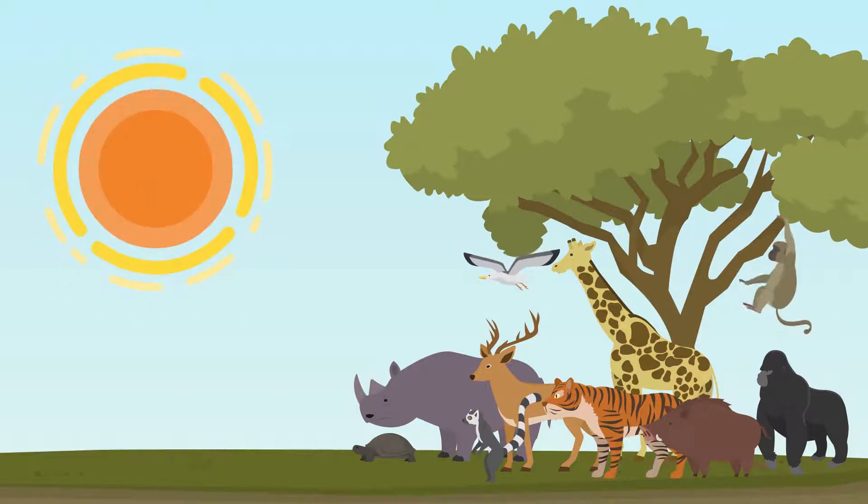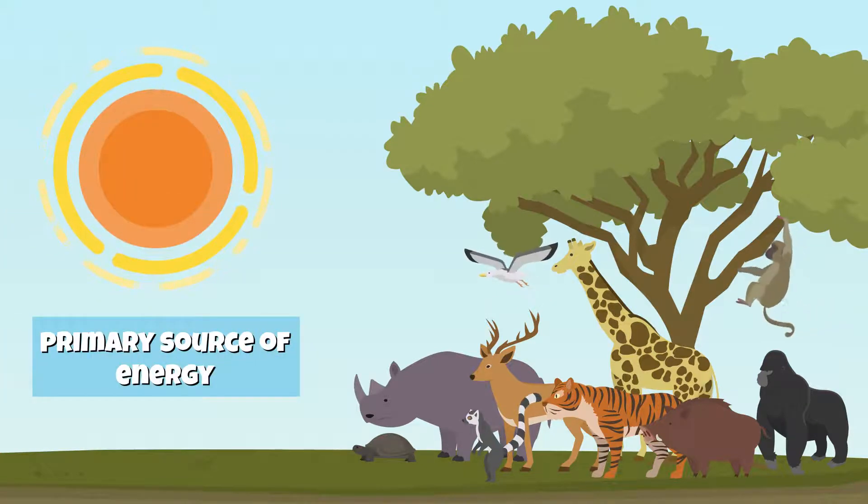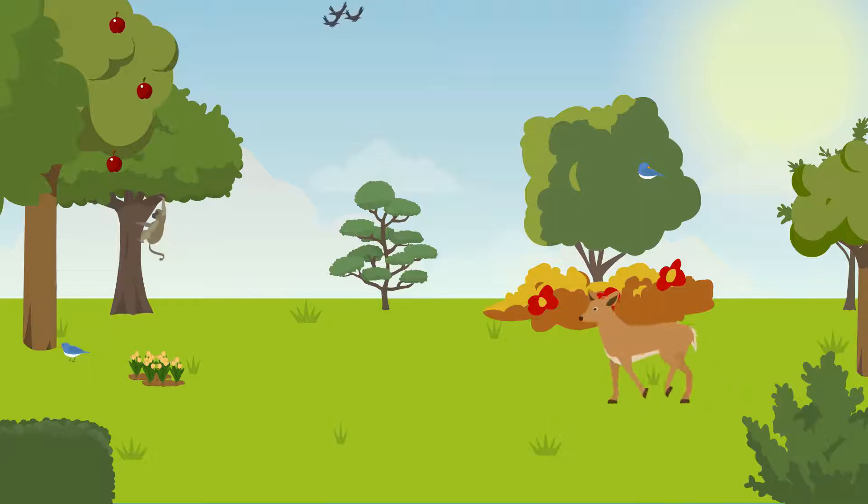Did you know that the sun is a primary source of energy in an ecosystem? Without the sun, plants wouldn't survive and all animals and insects that depend on plants as a source of energy would also die.